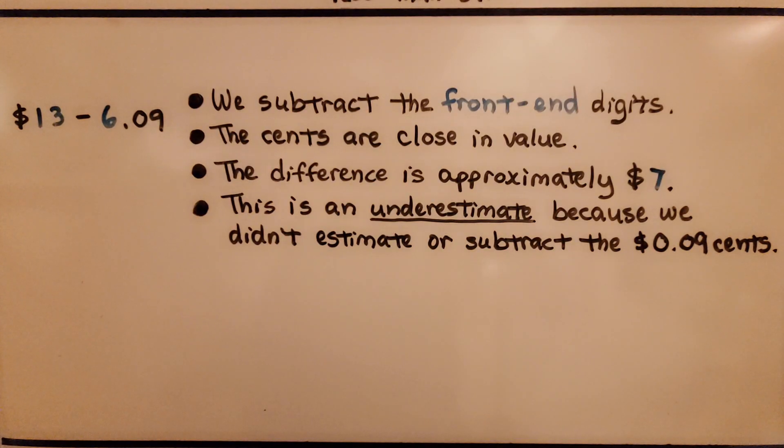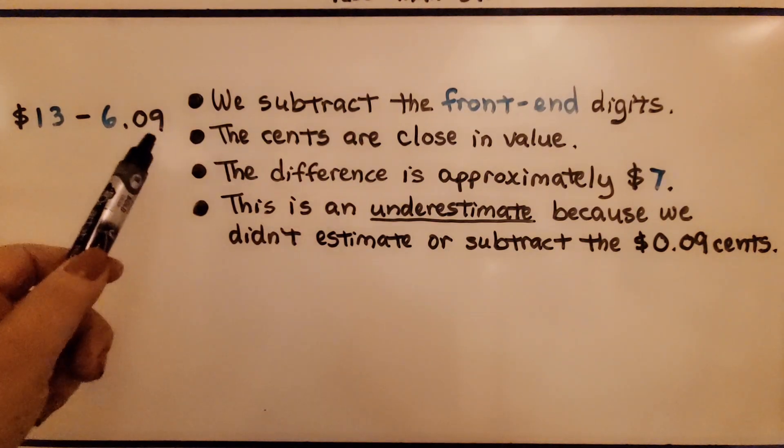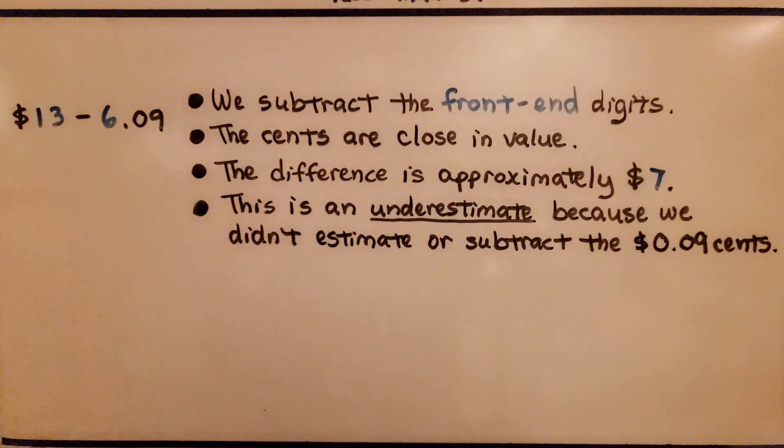Here we have $13.00 minus $6.09. We subtract the front end digits. We have 13 minus 6. Well, that would be 7. And the cents are close in value. This is just 9 cents compared to 0 cents. The difference is approximately $7.00. This is an overestimate because we didn't estimate or subtract the 9 cents.